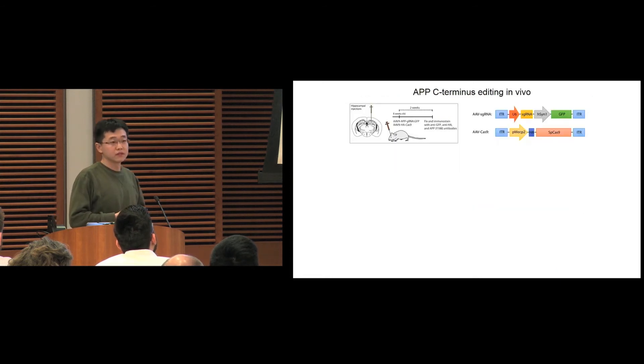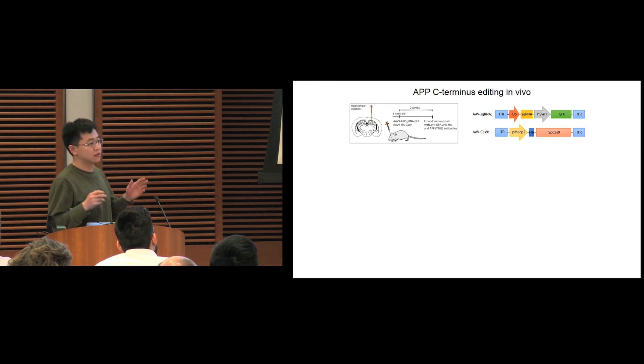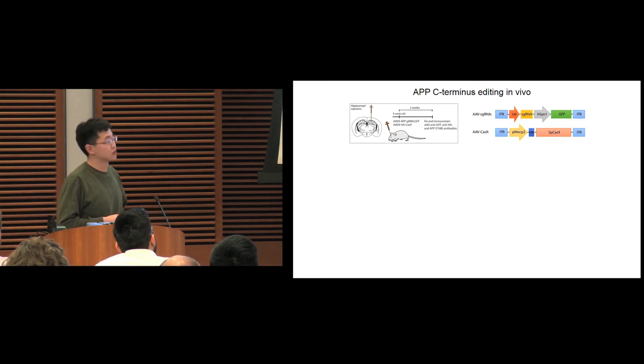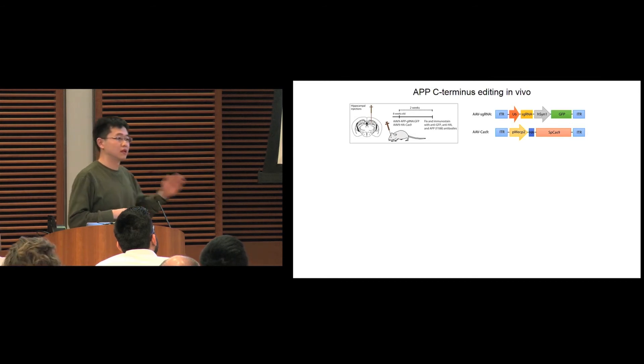Then we want to know whether this method, the APP CRISPR, can work in vivo and in brain. Here, we injected AAV viruses expressing Cas9 and guide RNA into the hippocampus of mouse brain. The viral vector contains the GFP gene, so that we can easily tell the infected neurons by GFP expression.